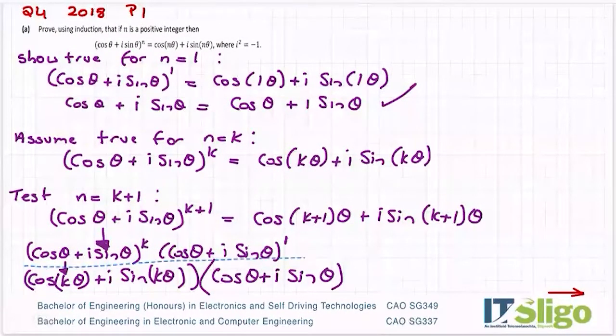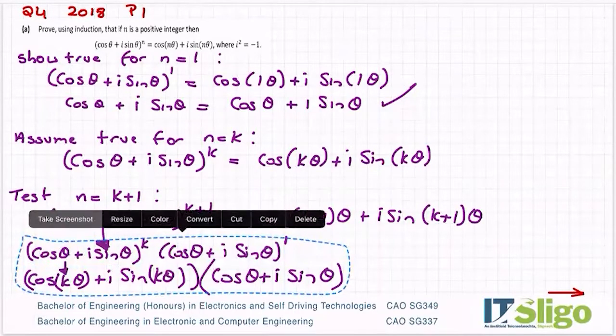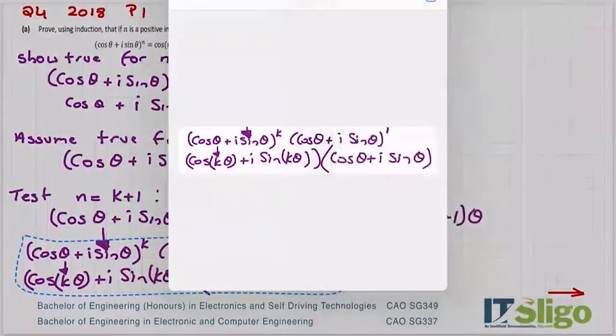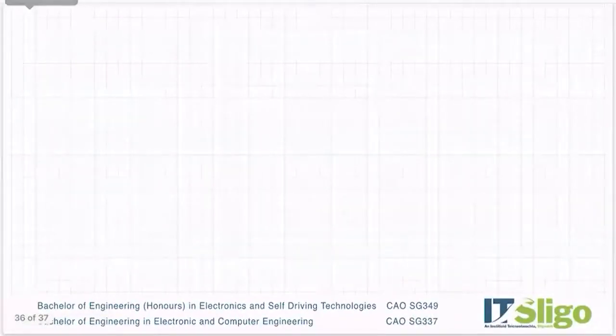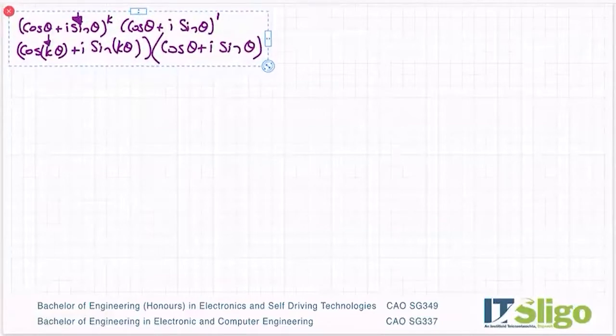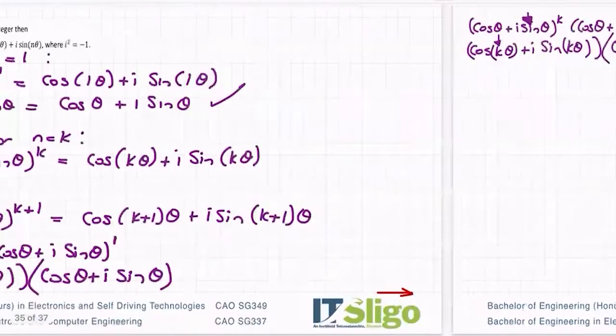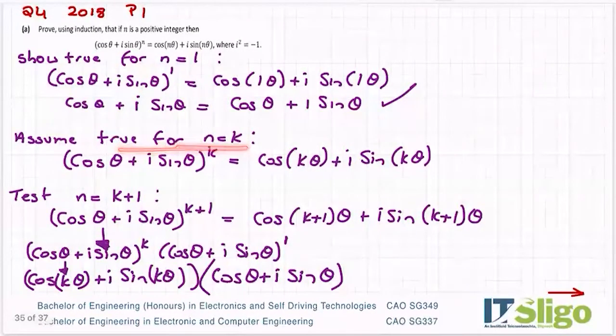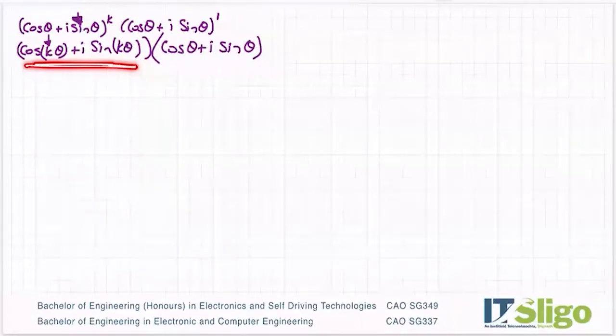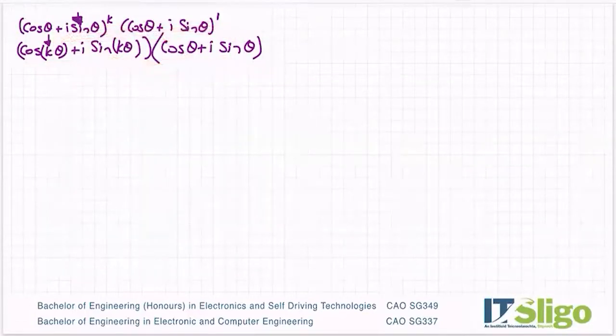Let me just copy this because this is where we left it. Let me just go on to a new page where we have more room. So where did we leave it? We used the rules of indices to break it up. And then because we assume true for n is equal to k, that's the output for anything to the power of k. Let's multiply it out.